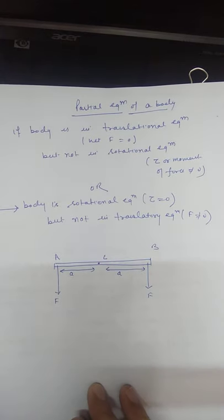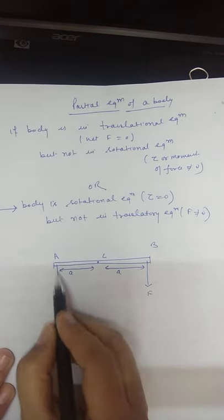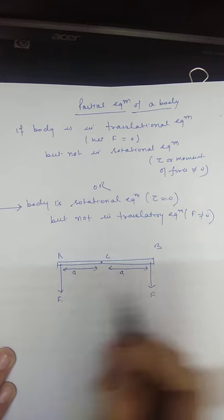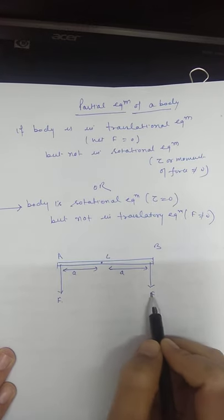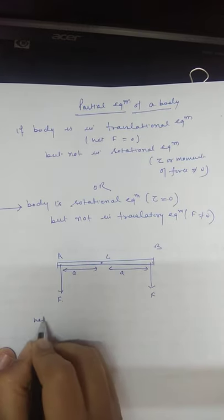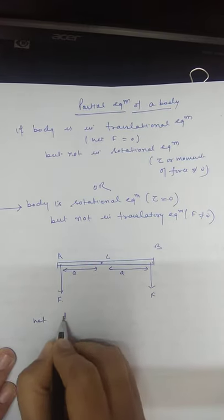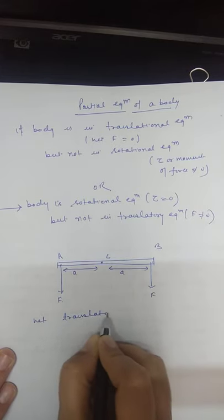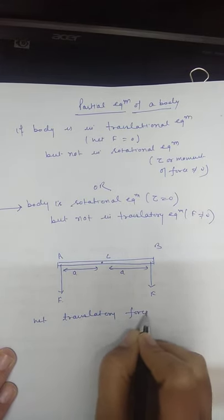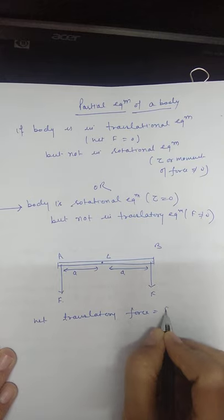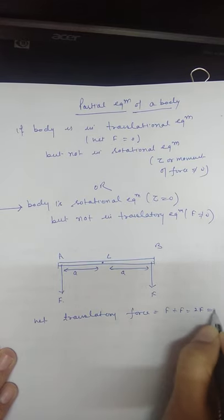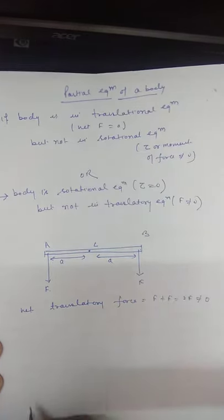What is the net translatory force acting on it? At point A the force is in the downward direction, and at point B it is also in the downward direction. So the net translatory force is F plus F, which equals 2F, and it is not equal to zero.